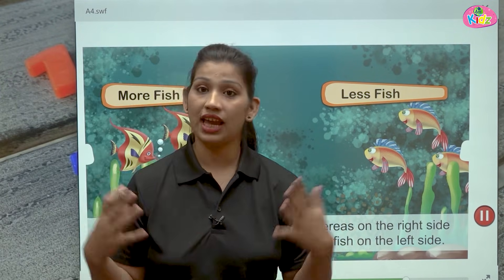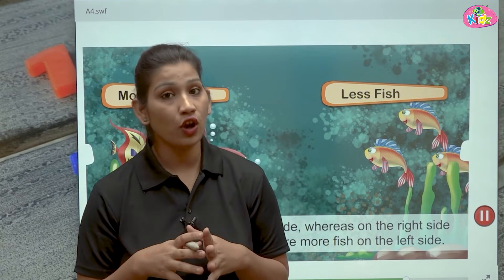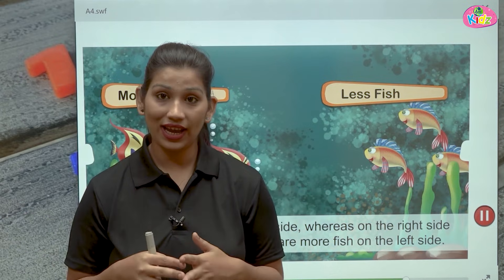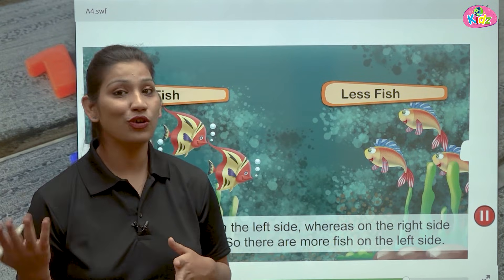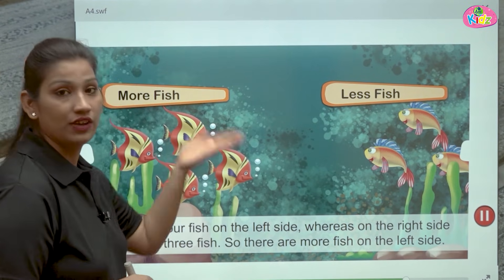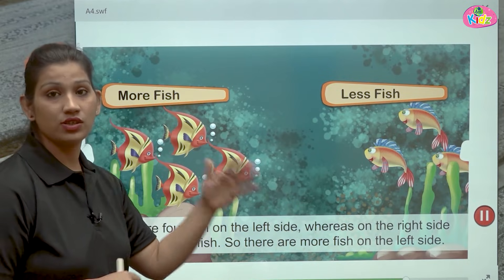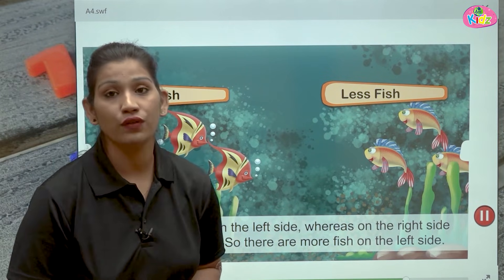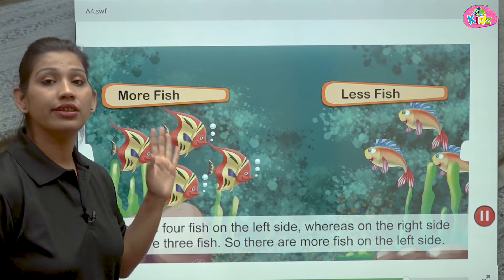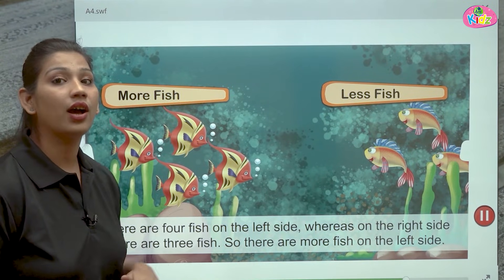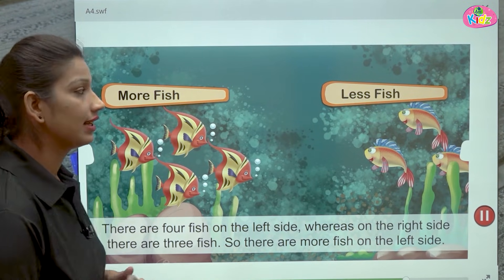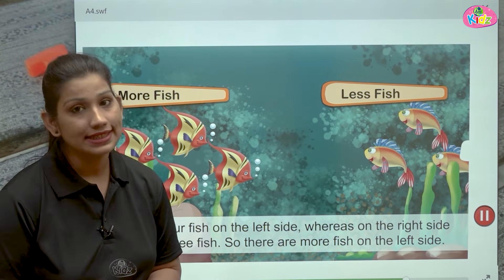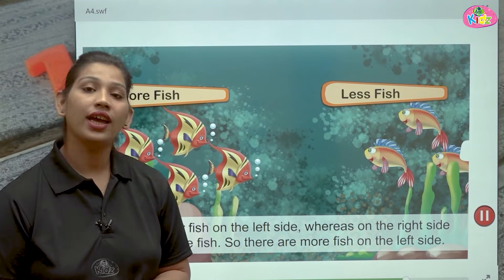It happens many times. When you have two different types of chocolates, one chocolate is more than the other, so you take more of that chocolate. This is like that only. We have two different types of fishes. On the left side we have four fishes, on the right side we have three fishes. So the fishes on the left side are more than the right side. These are more, this is less. More matlab hota hai zyada, less matlab hota hai kam.